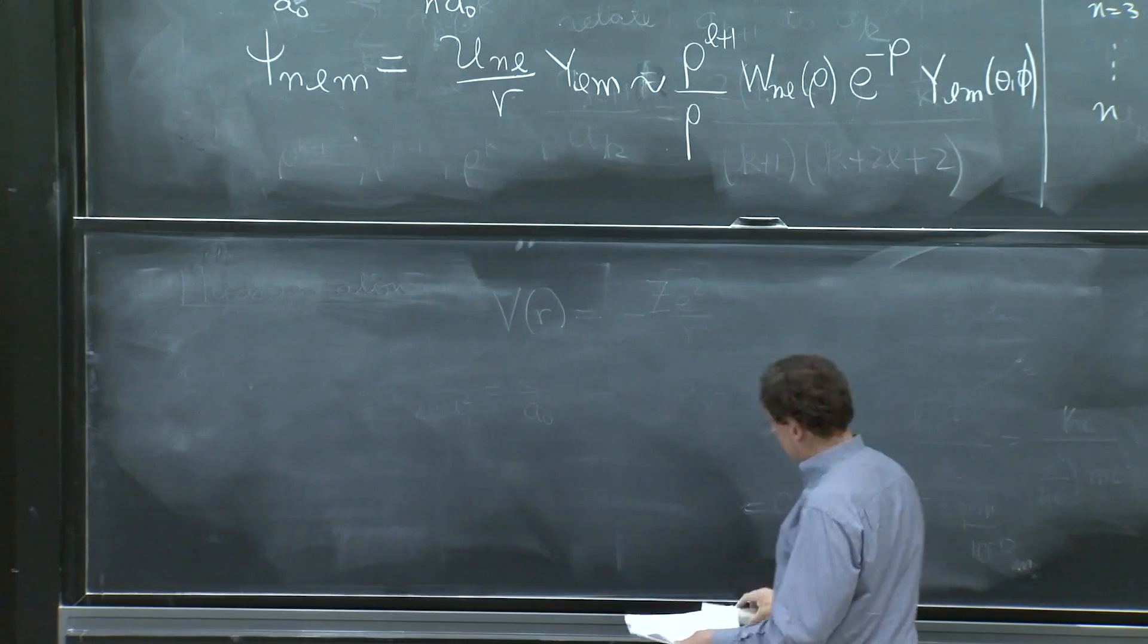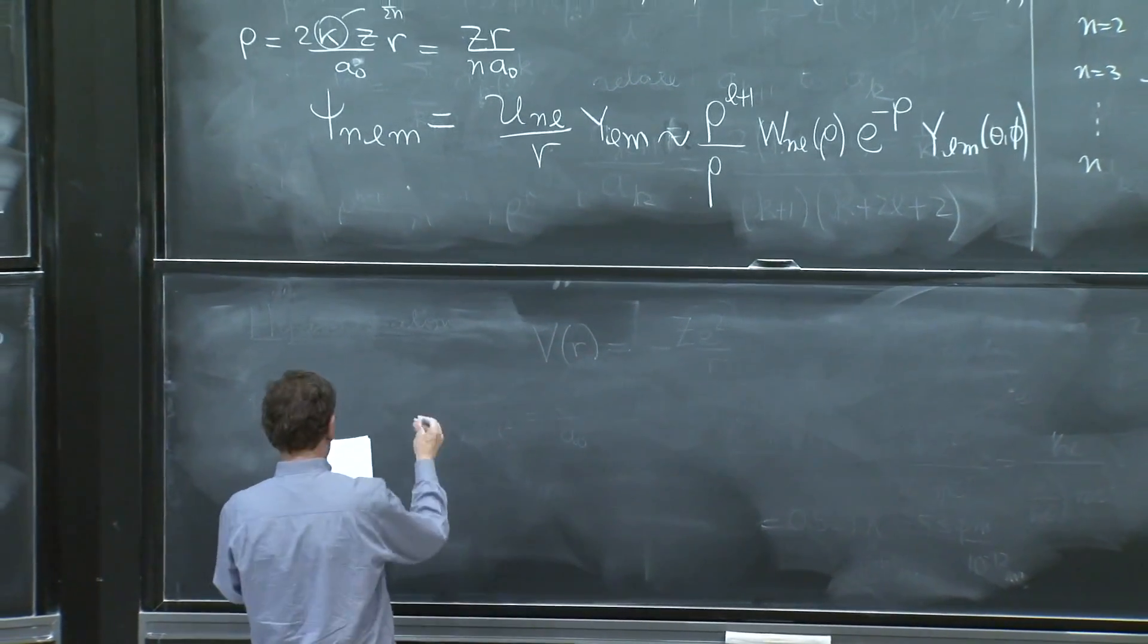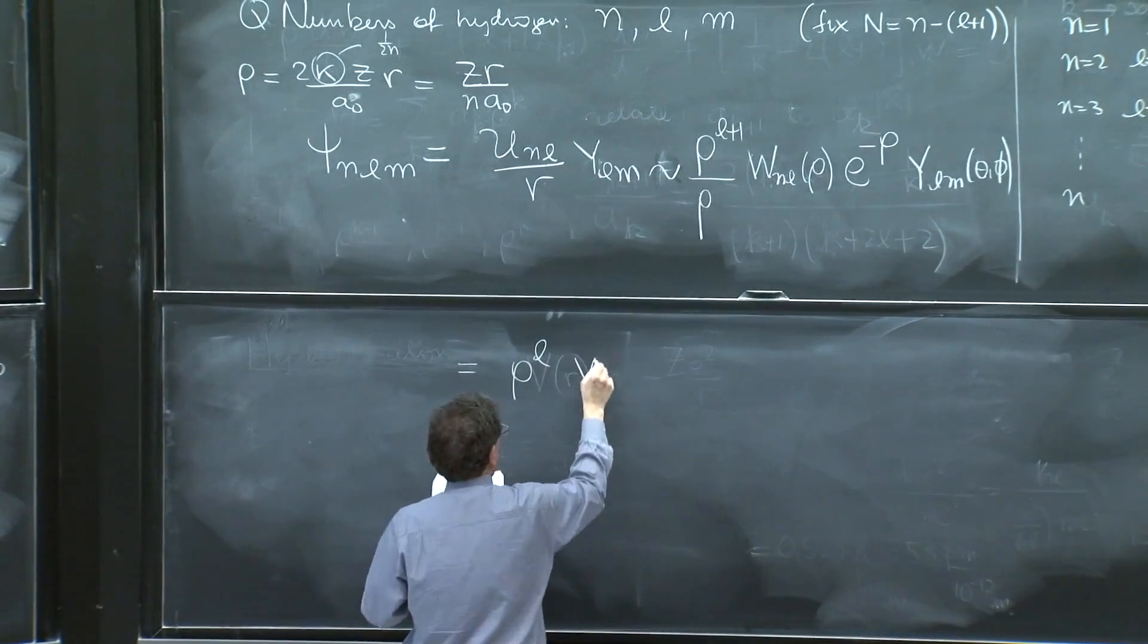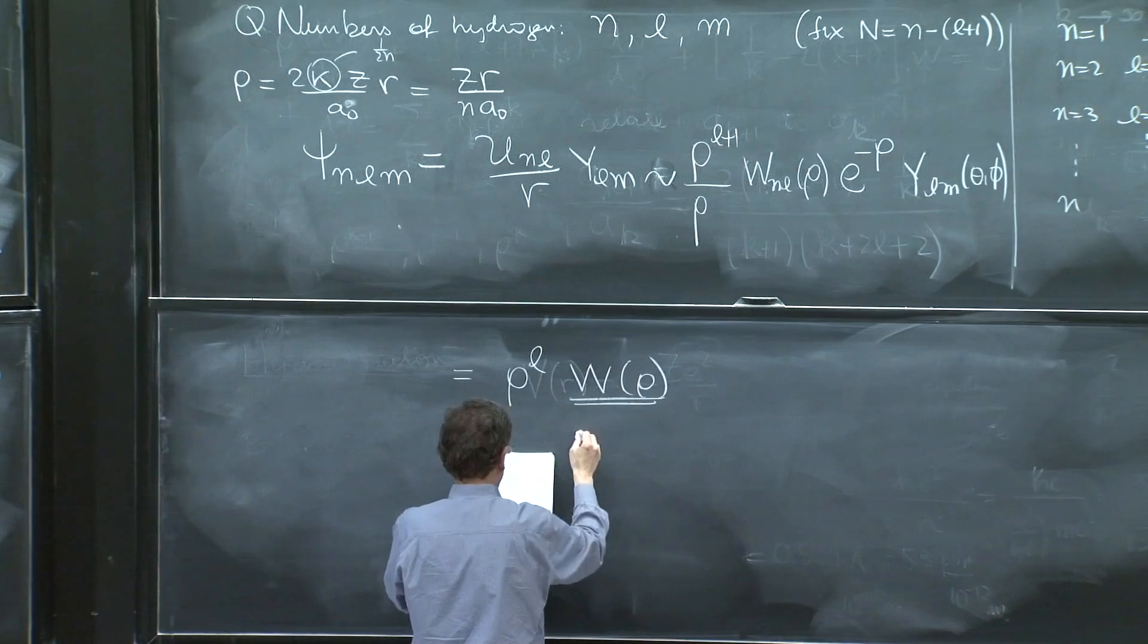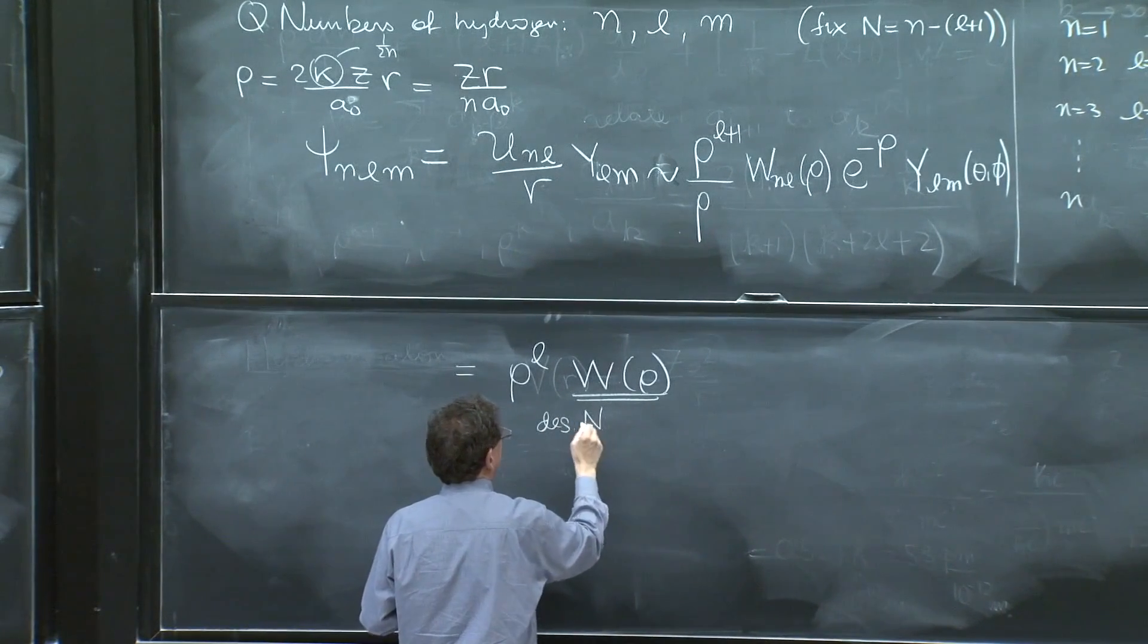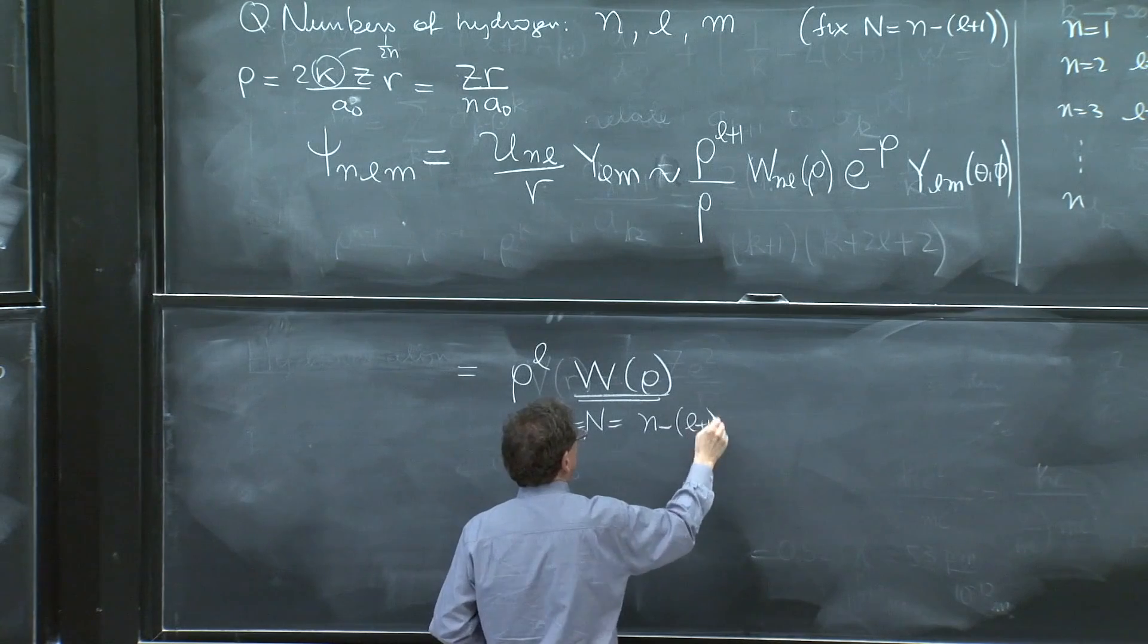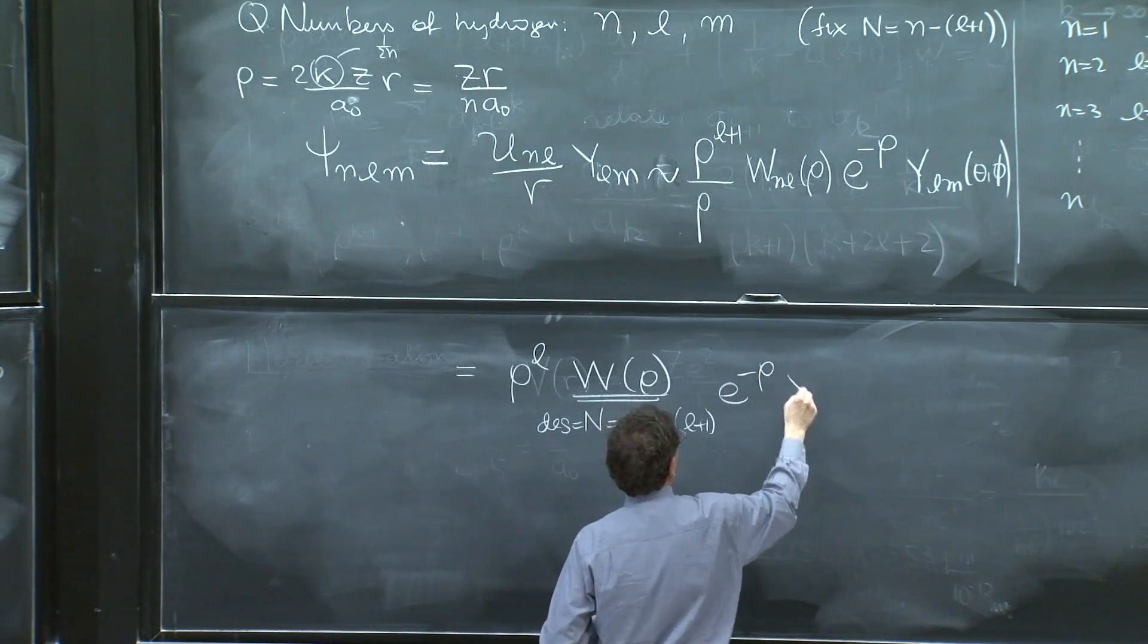So just to give a feeling of the solution, what does that give you? Rho to the l, a polynomial of rho, which is a polynomial of degree n, n, which is little n minus l plus 1 times e to the minus rho, ylm.